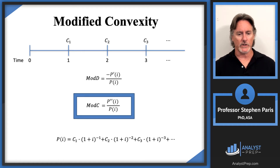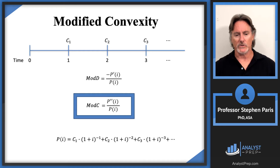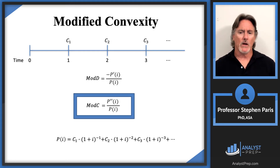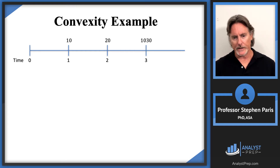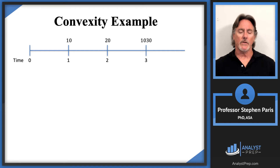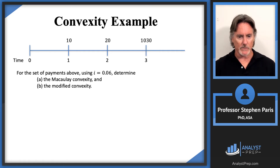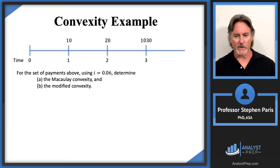Let's look at an example — the same one I used when introducing duration. I'm thinking of this as a three-year bond where the first coupon payment is 10, the second coupon payment at time two is 20, and the third coupon payment at time three is 30, plus a redemption value of 1,000 at time three, so the total payment at time three is 1,030. Using a 6% periodic effective interest rate, determine the Macaulay convexity for part A and the modified convexity for part B.